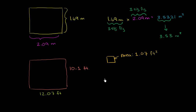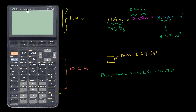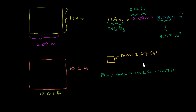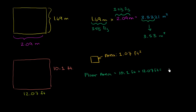What I want to figure out is how many tiles can fit on this bathroom floor. I'd calculate the floor area and divide by the tile area. The floor area equals 10.1 feet times 12.07 feet. Let me calculate: 10.1 times 12.07 gives us 121.907. So the floor area is 121.907 square feet.